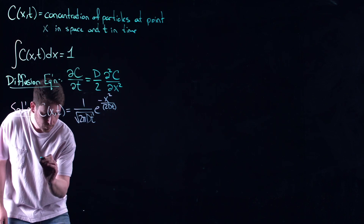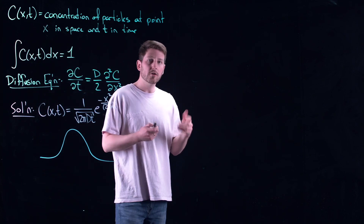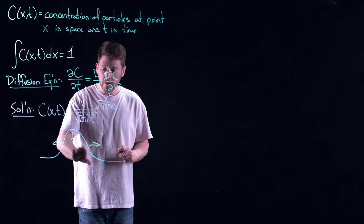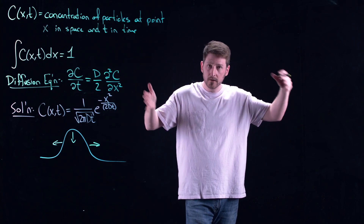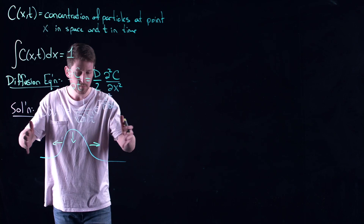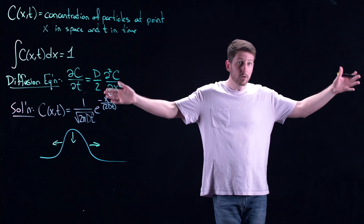If you plot this for increasing values of t, it spreads out and the peak comes down. Because of conservation, the area underneath is always equal to one. So if it's spreading and getting fatter, it gets shorter — wide and short as opposed to tall and skinny. It starts super tall and skinny and spreads out. The longer you wait, the further particles could get away — that's all this spreading tells you.